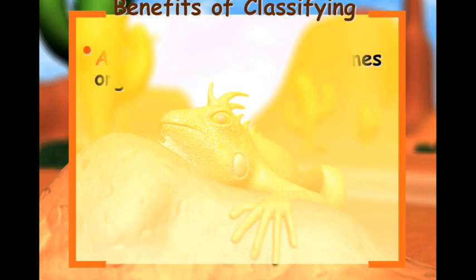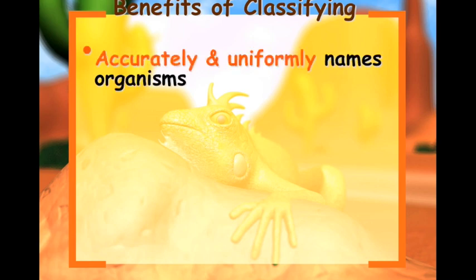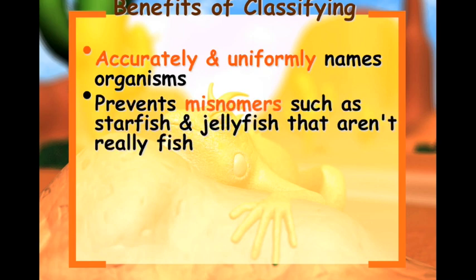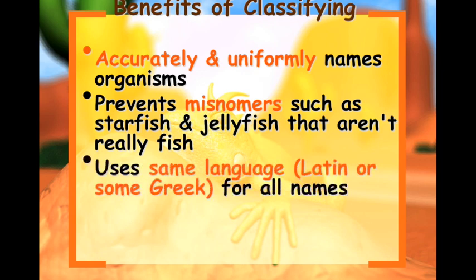So the benefits of classifying: you want to accurately and uniformly name organisms. This prevents misnomers such as starfish and jellyfish that really aren't fish. It also uses the same language — Latin and some Greek — for all names.